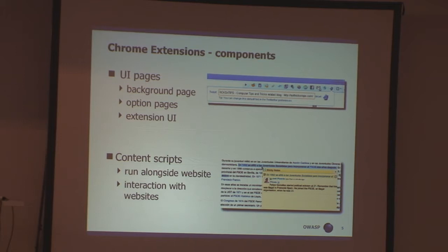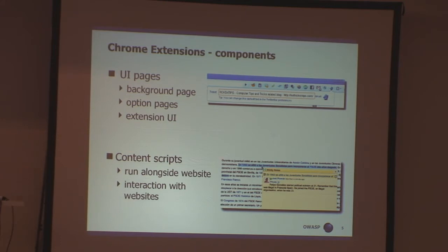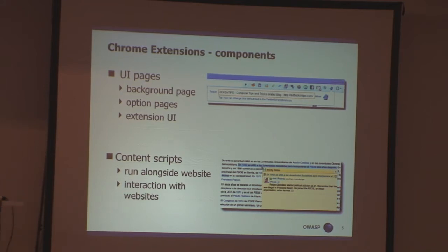When we think about what a typical Chrome extension consists of, it's very important to distinguish two different types of components. The first type are UI pages — these are HTML pages. One of them is the background page, which runs in the background, but these are HTML documents with JavaScript running inside that form the user interface of an extension. They get access to the privileged API. The other part of Chrome extensions are content scripts — small JavaScript snippets attached to the website you are visiting that run alongside the usual website JavaScript. They run in HTTP or HTTPS origin and don't have access to the privileged API, but they may modify or access the DOM of the original website.